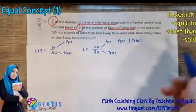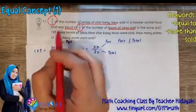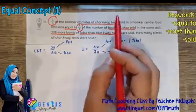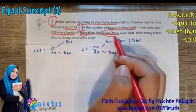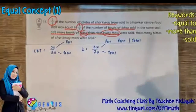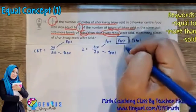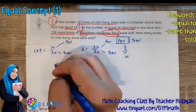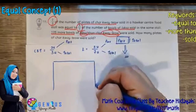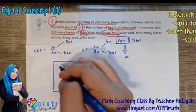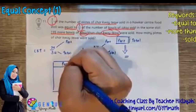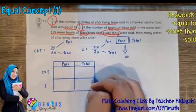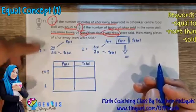Now we have all this information. The question tells us there are 135 more bowls of laksa than char kway teow, and we are comparing the total number of laksa and char kway teow. For the equal concept, the parts must be equal. We draw an equal concept box — a table cut into two parts — with columns for Part and Total, and rows for char kway teow and laksa.